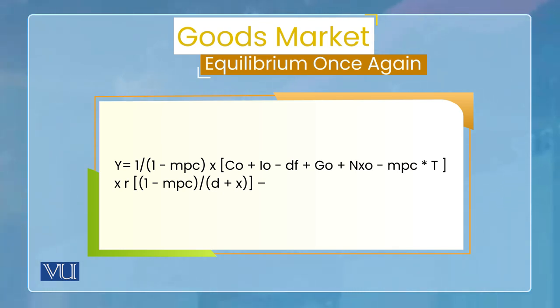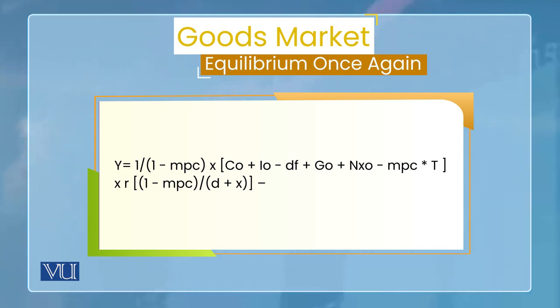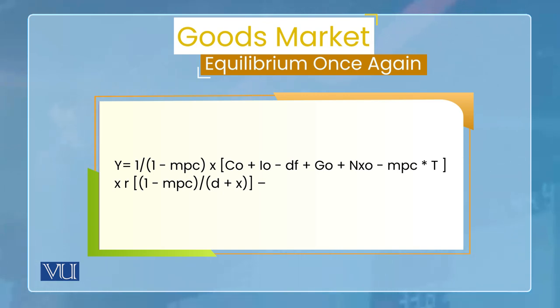Looking at the equation carefully, the second component on the right side — which contains RR (the interest rate) — relates to Y in the IS curve. The first part contains autonomous variables: the autonomous part of consumption (C-not), autonomous investment (I-not), exogenous government expenditures, and the autonomous part of net exports — all are inside that bracket.